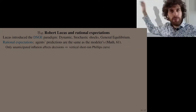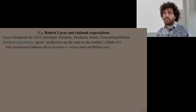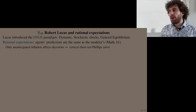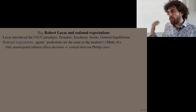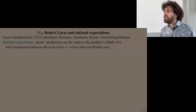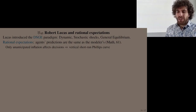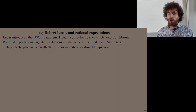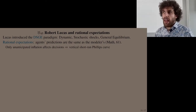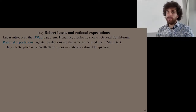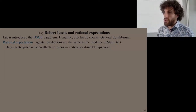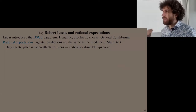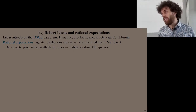In Friedman's framework, expectations are adaptive: workers form their expectation of future prices by looking at past prices and the mistake they made in their previous expectation, adjusting to correct that mistake. But for Lucas, when we assume people are rational, we must conclude they have the best expectations possible about the future — as if they know the model, they know how the economy behaves, and given the information available to them they form expectations in a Bayesian way, in the best way possible. They don't take into account just past prices and past expectation mistakes; they take into account all available information.